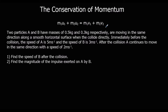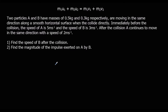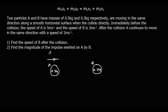We're going to have two different objects, two particles. Here we've got particle A and particle B. Particle A has a mass of 0.5 kg and particle B 0.3 kg. They're moving in the same direction along a smooth horizontal surface. When they collide directly, immediately before the collision, A is moving at 5 m/s and B is moving in the same direction at 3 m/s.